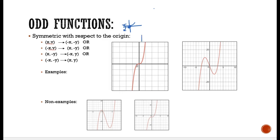Look at this first graph — it's a cubic function. If I fold it vertically and then fold it down, those two curves would match, so this is an odd function. Over here, this one is also odd. I would fold it vertically in this direction and then fold it down and it would work. If I can fold it either way and it works, then it is an odd function.